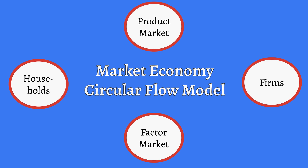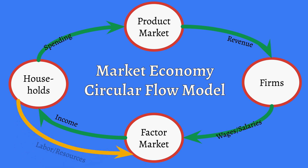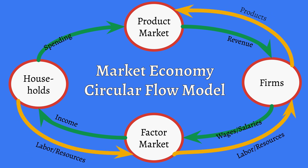These things interact in all kinds of different ways. There is the monetary flow, where money makes its way around the economy, as you can see here. And in the opposite direction, we have the physical flow — things like labor, resources, products, and stuff that make their way through the economy.